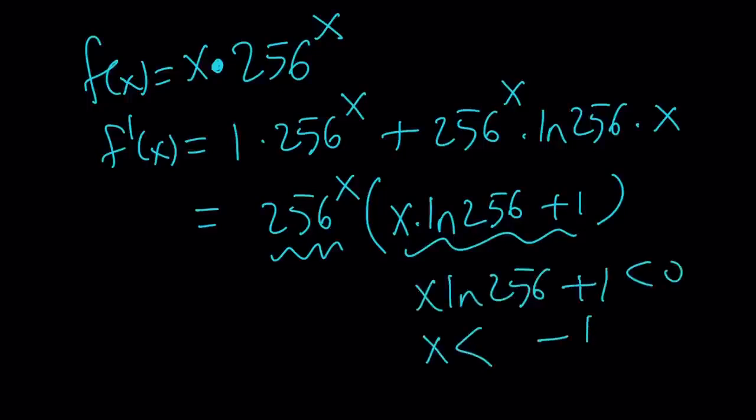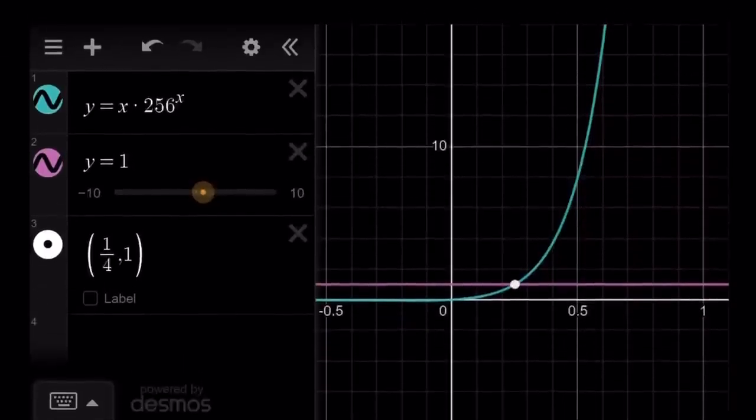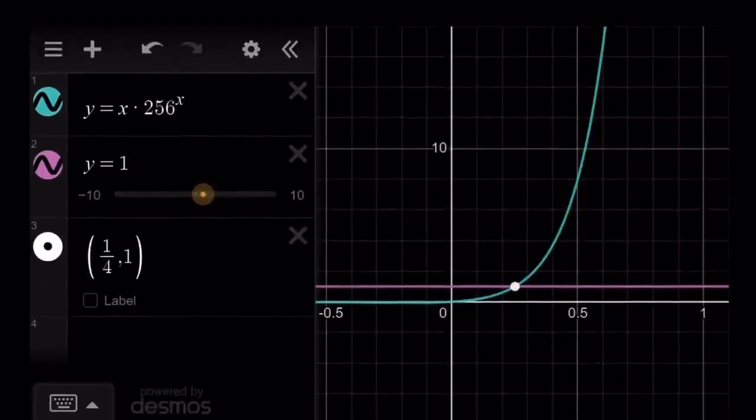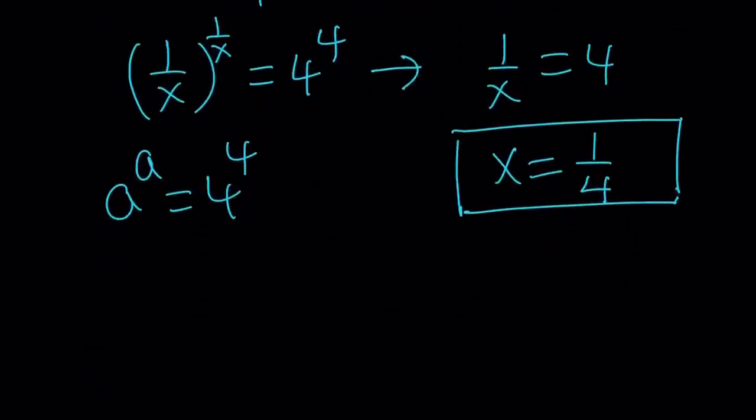x must be less than negative 1 over ln 256. And as you can guess, that's a very, very small negative number, or negatively large. But anyways, so our function on this interval is going to increase, and it's going to intersect y equals 1 at one point.